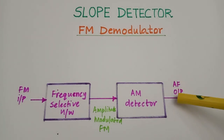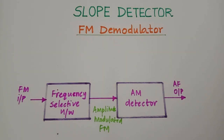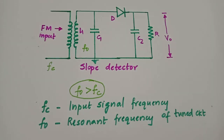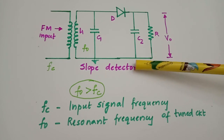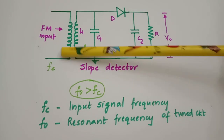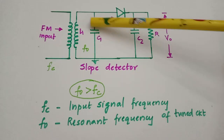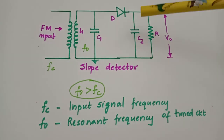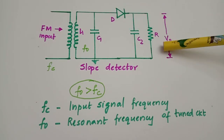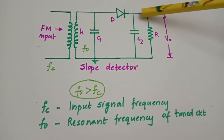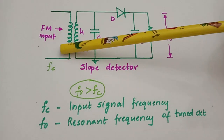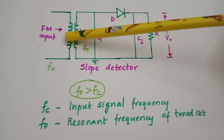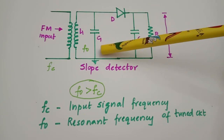Next we shall see the circuit for a simple slope detector. As seen in the block diagram, there is a frequency selective network followed by an AM detector. A simple diode detector is used for detecting the AM signal, and the tuned circuit serves as the frequency selective network.